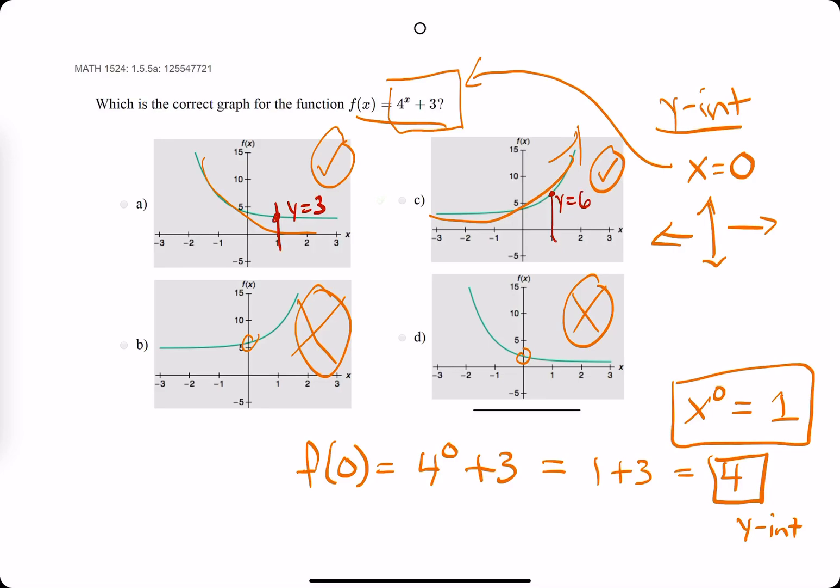So let's confirm by plugging x = 1 into the function. f(1) is 4^1 plus 3. 4 to the 1 is 4, plus 3 is 7.